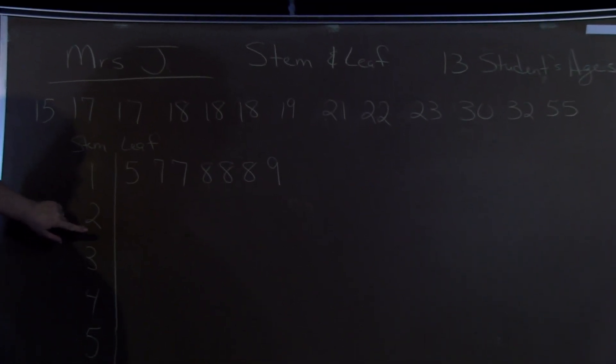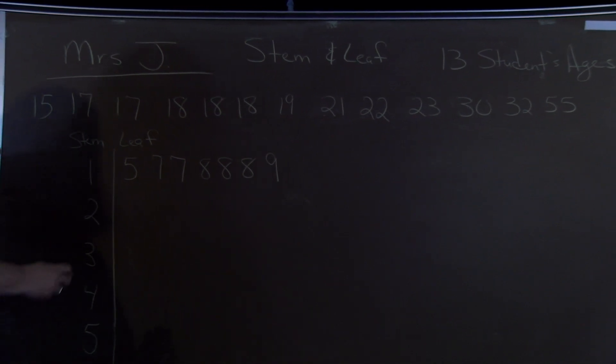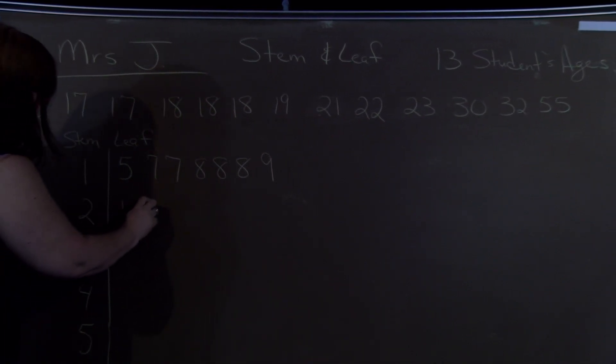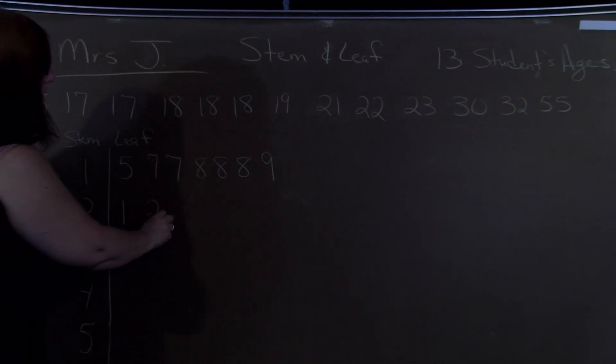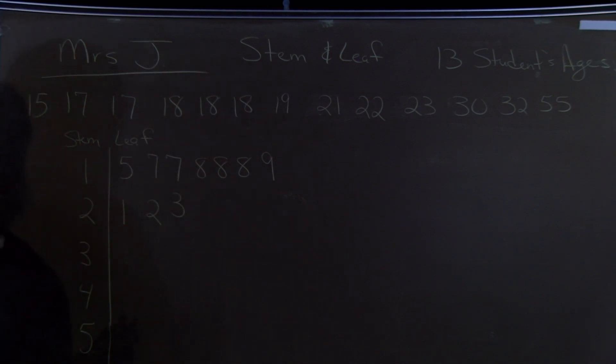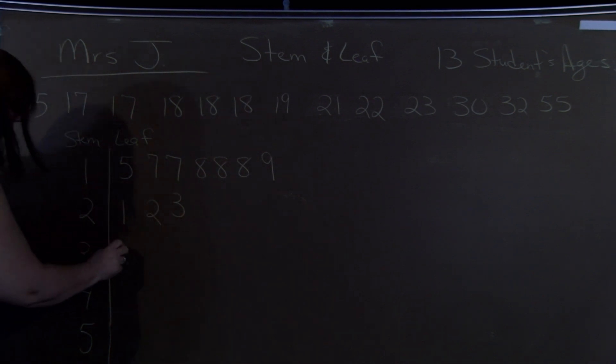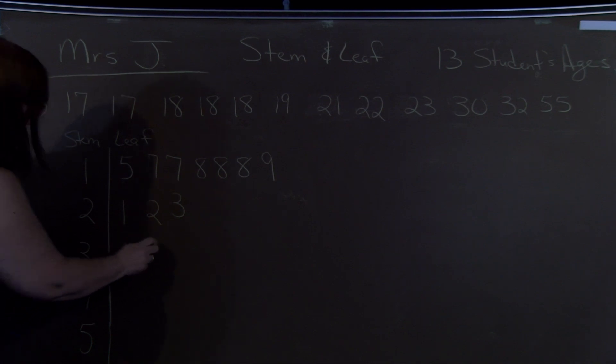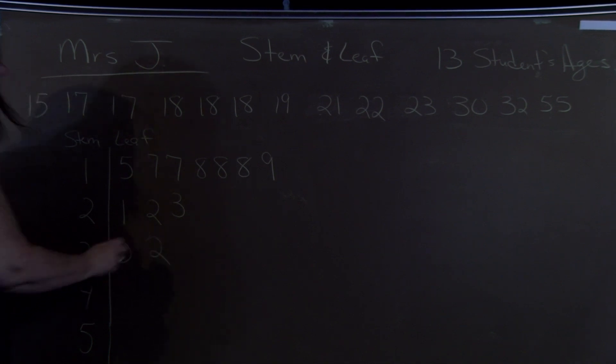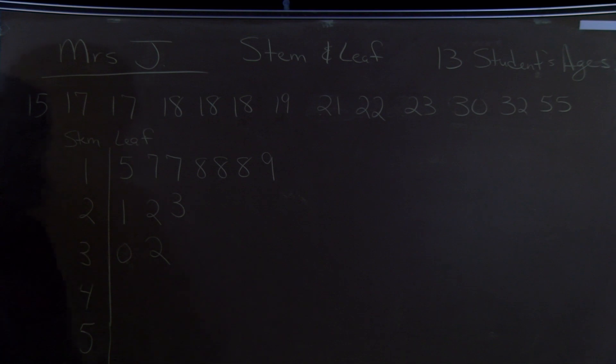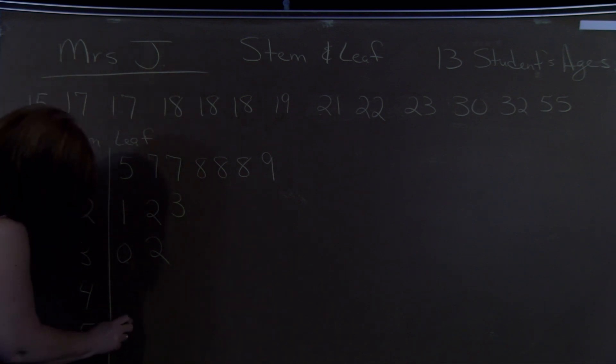Now we're starting in the 20s. We go to this one. We have a 21, a 22, and a 23. 30s. There's a 30 and a 32. And then there's no 40, so we wouldn't put anything. And then there's a 55.